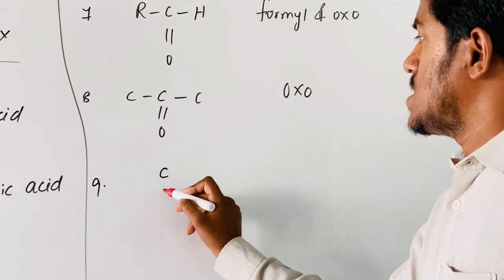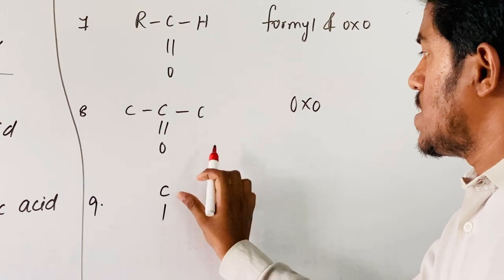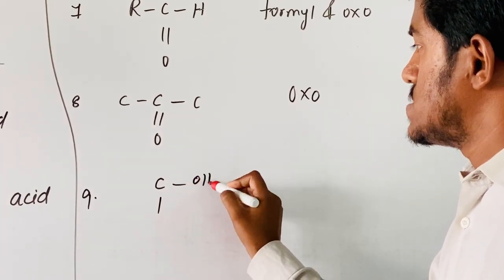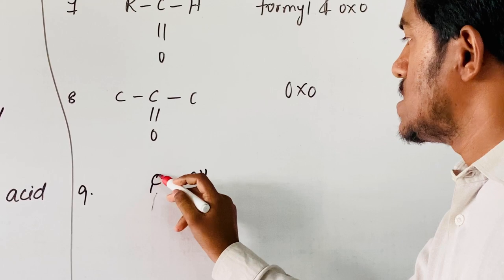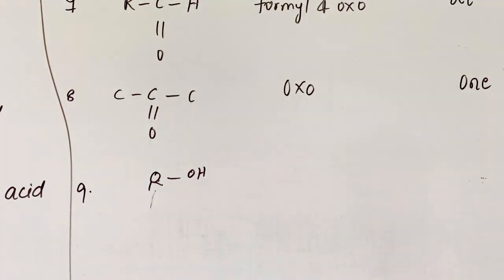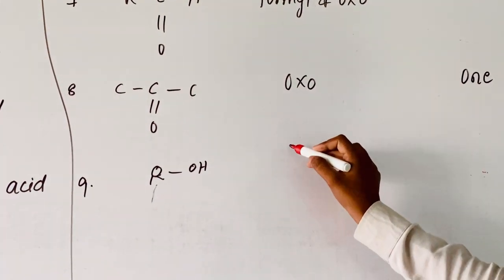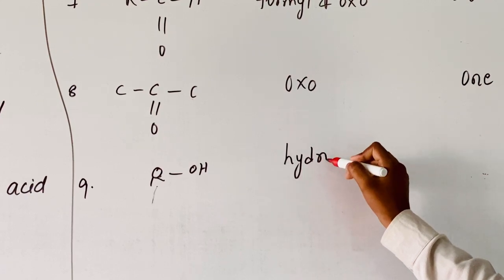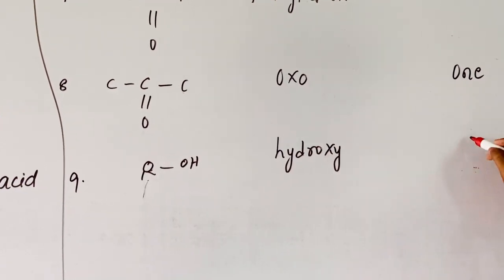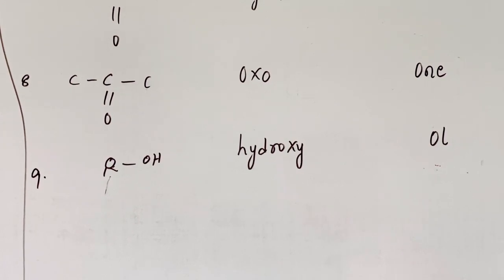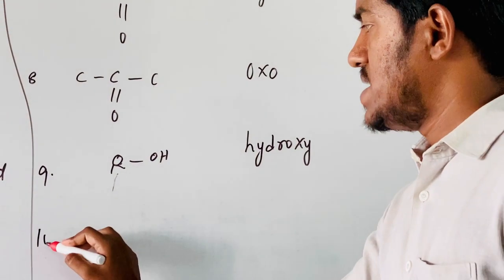Now coming to ninth one, that is R-O-H, which represents alcohol. Hydroxy is the secondary prefix, and O-L is the secondary suffix.